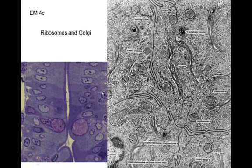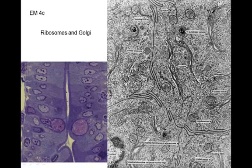If we look at the intestinal absorptive cell, we can see terminal bars very nicely, and clusters of mitochondria scattered throughout the cell, which correspond to these at the ultrastructural level. These are intestinal absorptive cells whose function is absorption. The goblet cells are also visible in the intestine. We also see coated vesicles and smooth ER budding off the rough endoplasmic reticulum. There's a nice Golgi apparatus, membranes between adjacent cells, and an autophagic vacuole.